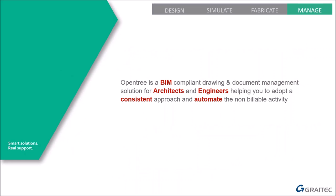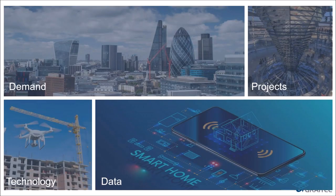OpenTree is a BIM compliant drawing and document management solution for architects and engineers, helping you to adopt a consistent approach and automate non-billable activity. Demand is changing and projects are becoming more complex. When you look at technology trends, data is an important trend we cannot ignore. Arguably we're in the fourth industrial revolution — the data era — and the better we can get with our information at the front end, the more we can do with it downstream, maximising efficiency. That's one of the key takeaways for today: helping you to become more efficient.